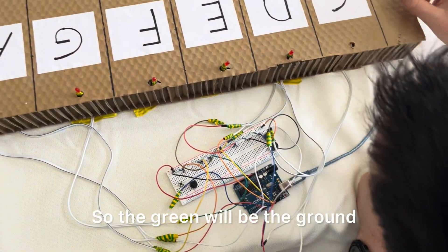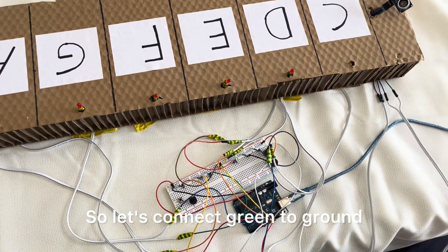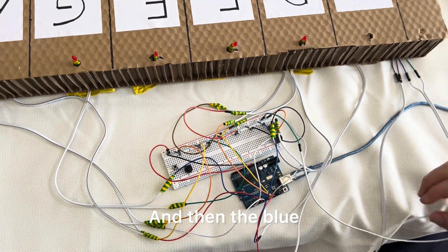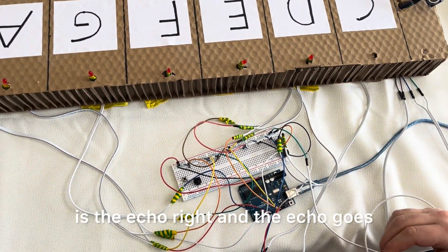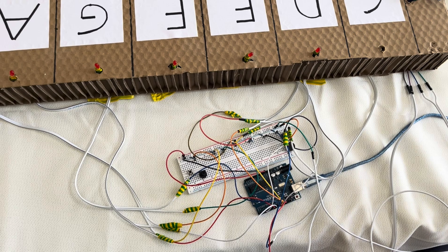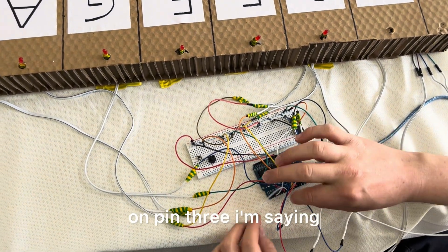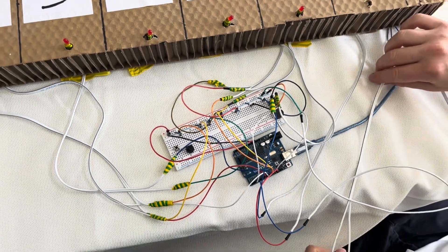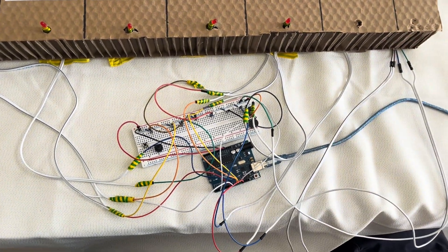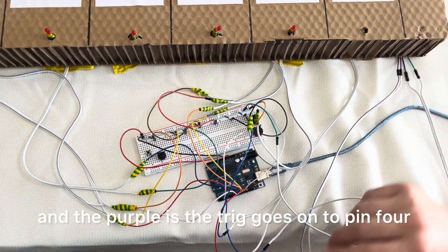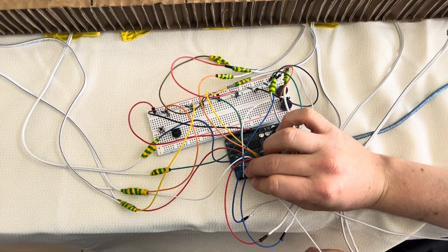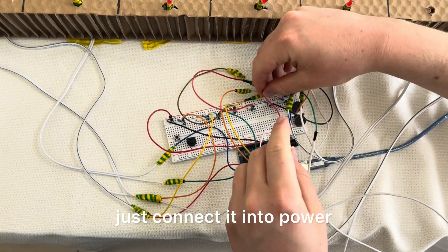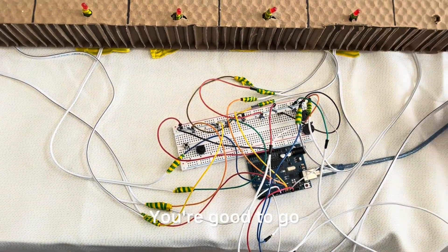So let's just do that quickly. The green will be the ground, so let's connect green to ground. And then the blue is the echo, and the echo goes on pin 3. And then we have the purple, which is the trig, goes on to pin 4. And then the last one is power. So we'll just connect it into power. And that's it. You're good to go.